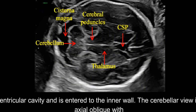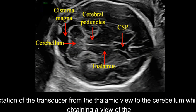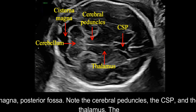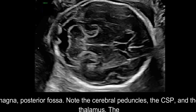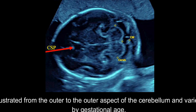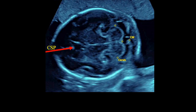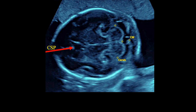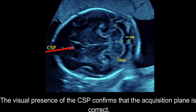The cerebellar view is axial oblique with rotation of the transducer from the thalamic view to the cerebellum while obtaining a view of the central cerebellar echogenic firmus. This plane allows visualization of the cerebellum and cisterna magna, posterior fossa. Note the cerebral peduncles, the CSP, and the thalamus. The transcerebellar diameter is measured from the outer to the outer aspect of the cerebellum and varies by gestational age. Note the box-like cavum septi pellucidae, CSP, which is seen with the cerebellar view. The visual presence of the CSP confirms that the acquisition plane is correct.